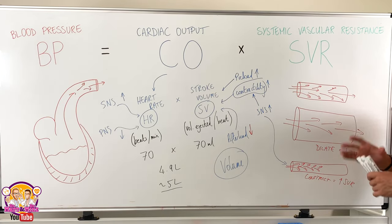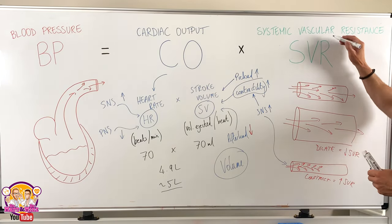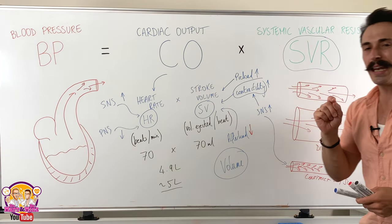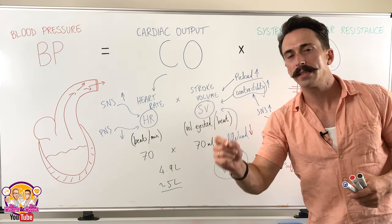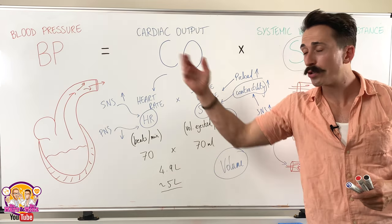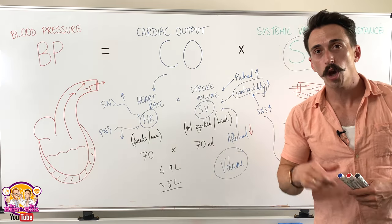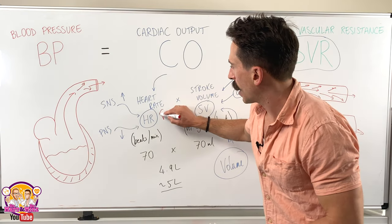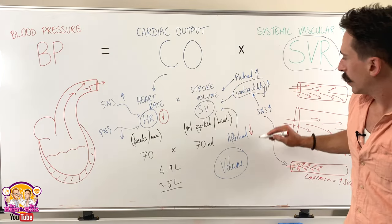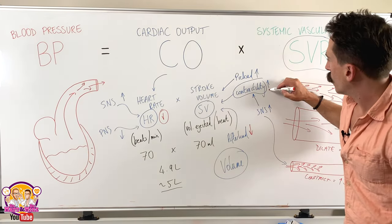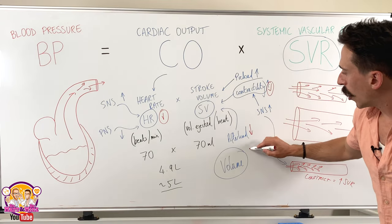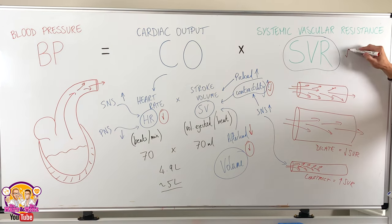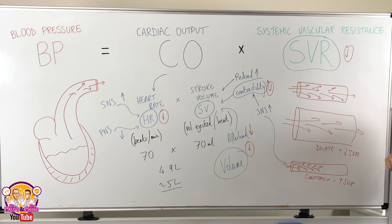So what's the take-home message? Any anti-hypertensive medication — medication used to treat blood pressure — will either have its effect on heart rate, on contractility, on the volume of blood moving through the body, or on the diameter of our blood vessels. This is how all of our blood pressure medications work.